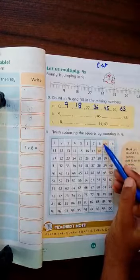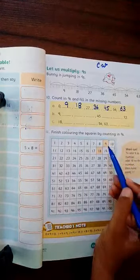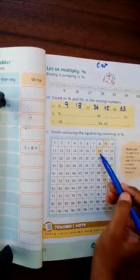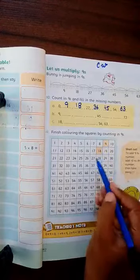9 times 1 is 9, the same as they have colored. You have to put a color and color it. 9 times 2 is 18, the same color. 9 times 3 is 27, the same color.